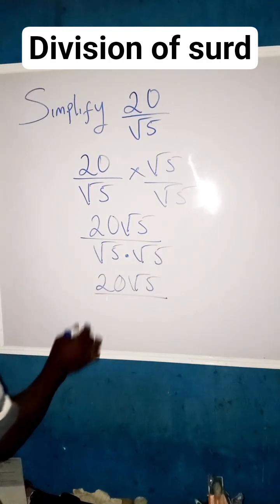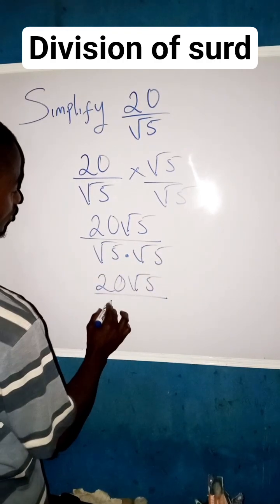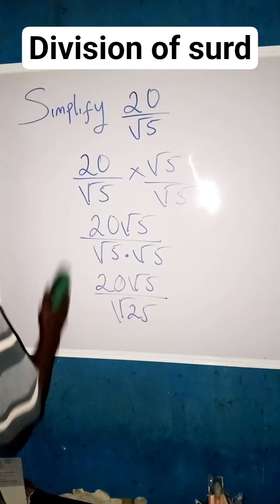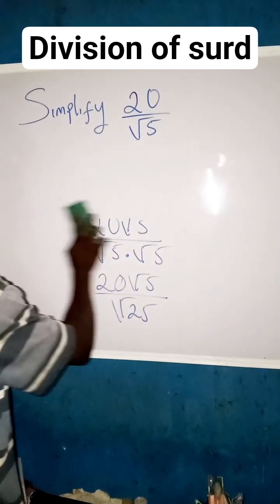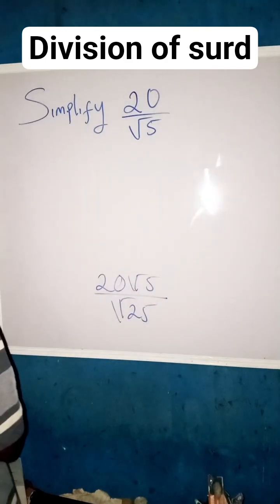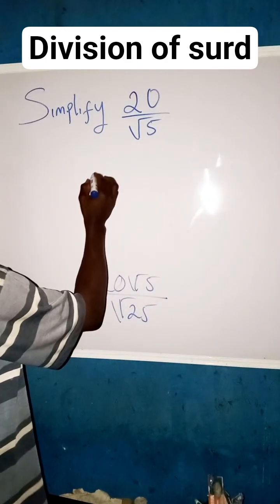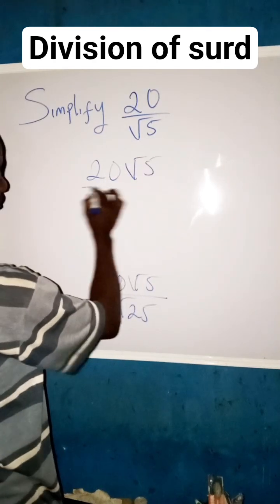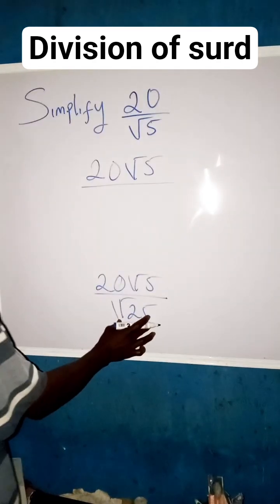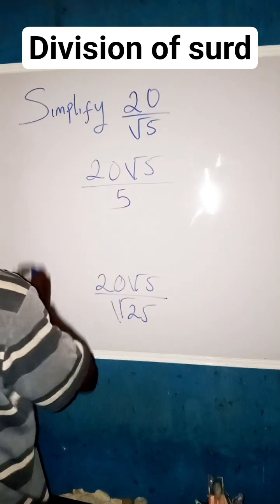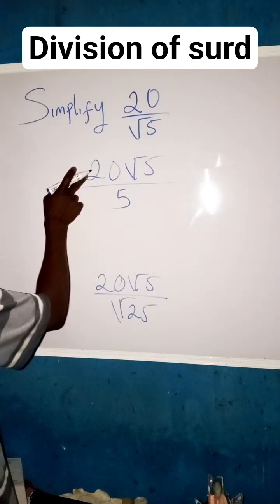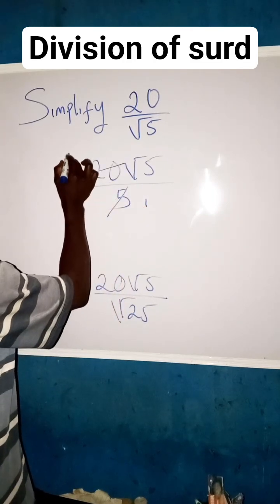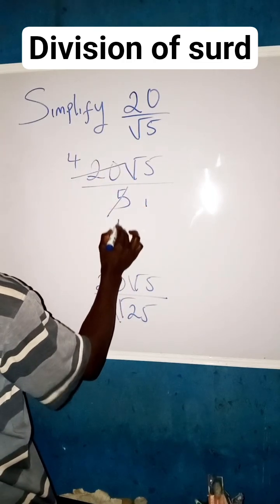Root 5 times root 5 gives us root 25, which equals 5. So we have 20 root 5 all over 5. Now 5 goes into 20 four times, so we are left with 4 root 5.